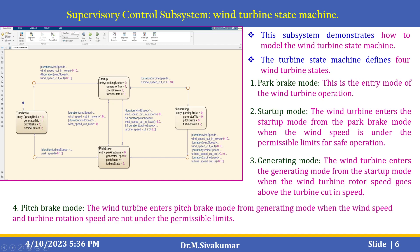The first one is the park brake mode — this is the entry mode of the wind turbine operation. The next one is the start-up mode: the wind turbine enters start-up mode from park brake mode when the wind speed is within permissible limits for safe operation. The third is the generating mode: the wind turbine enters generating mode from start-up mode when the rotor speed goes above the turbine cut-in speed. The fourth is the pitch brake mode: the turbine enters pitch brake mode from generating mode when the wind speed and turbine rotation speeds are not within permissible limits.